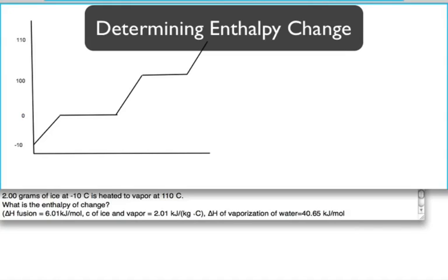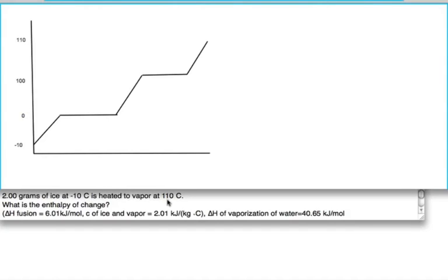In this question, you're given two grams of ice at minus 10 degrees Celsius, and it reaches the final temperature of 110 degrees. You're asked to determine the change in enthalpy of this overall reaction as ice goes from minus 10 to 110 degrees Celsius.